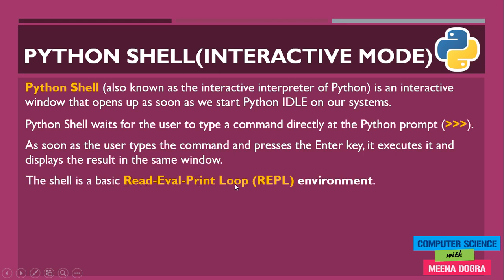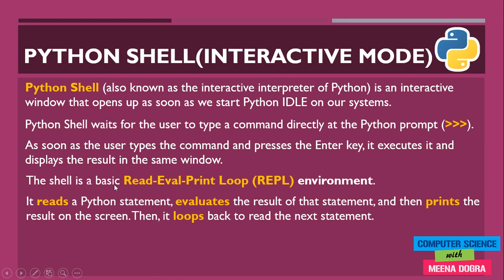The shell is a basic Read-Eval-Print Loop (REPL) environment. When you type a command, the shell reads the Python statement, evaluates it — meaning it processes the statement and finds the result — then prints the result on the screen. After showing the result, it loops back and is ready to take the next statement from your side.